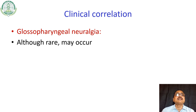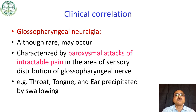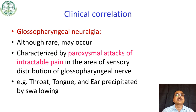Another condition is glossopharyngeal neuralgia — pain along the distribution of the glossopharyngeal nerve. Although rare, it is characterized by paroxysmal attacks of intractable pain in the area of sensory distribution of the glossopharyngeal nerve, for example the throat, tongue, and ear, which are precipitated by swallowing.